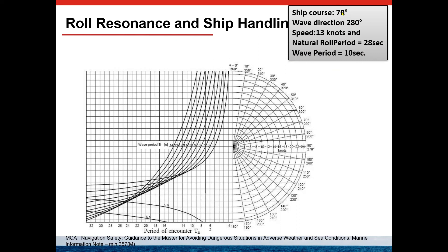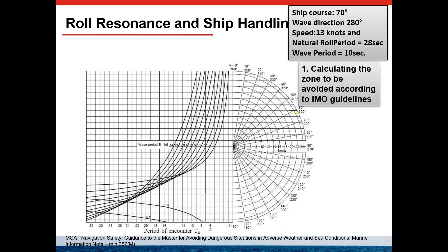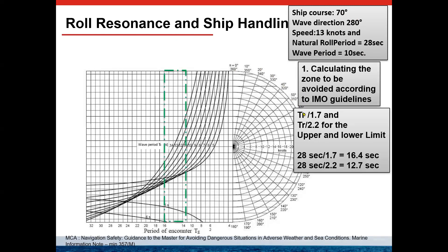Since ship course is less than wave direction, the angle of encounter is 280 minus 70 = 210 degrees. First, we calculate the zones to be avoided according to IMO guidelines. For the parametric rolling zone, we divide the natural rolling period by 1.7 and 2.2 to get the upper and lower limits — in some publications 1.8 is used. Substituting: 28 seconds divided by 1.7 gives 16.4 seconds, and 28 divided by 2.2 gives 12.7 seconds. These define the parametric rolling danger zone.